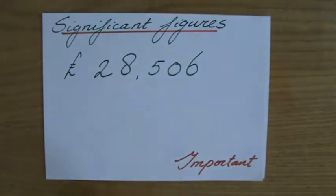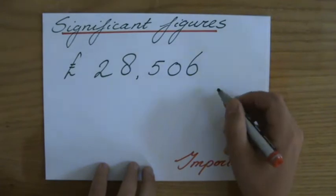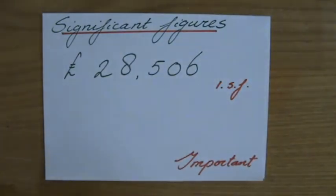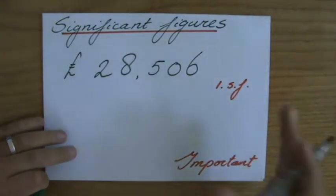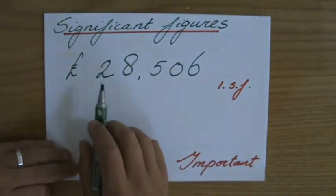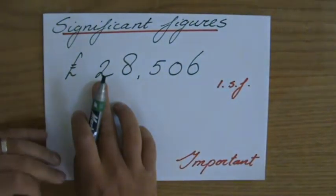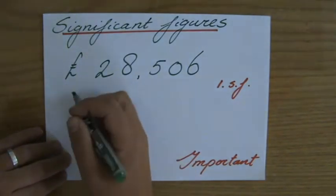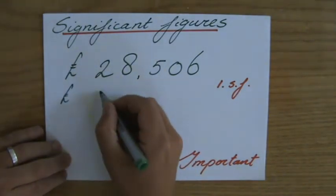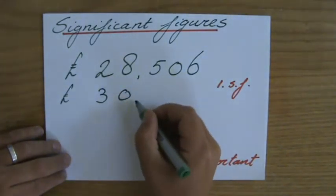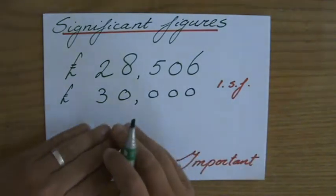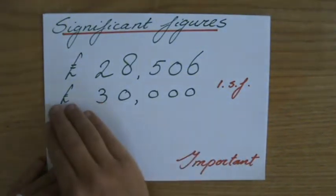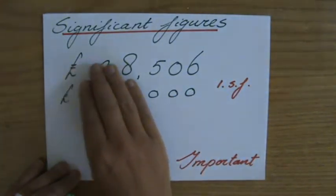Now if I would have to round to one significant figure — written as 1SF — I round similarly to rounding with decimals or whole numbers. My first significant figure is the 2. Does it stay a 2 or go up to a 3? That depends on the next number — it's a 5 or higher, so the 2 goes up. Rounded to one significant figure, this is 30,000. It loses a certain amount of accuracy.